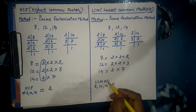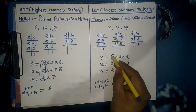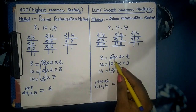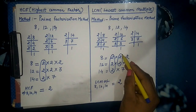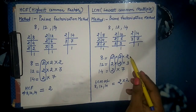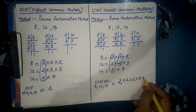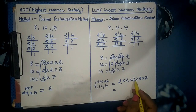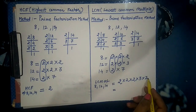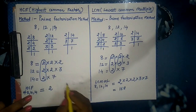In the case of LCM, we write all common and uncommon factors. 2 is common in all three numbers, so we write it once. Another 2 is present in 8 and 12 but we write it only once. Then 3 and 7 are also included. So we multiply: 2 × 2 × 2 × 3 × 7 = 168. Therefore the LCM of 8, 12, and 14 is 168.